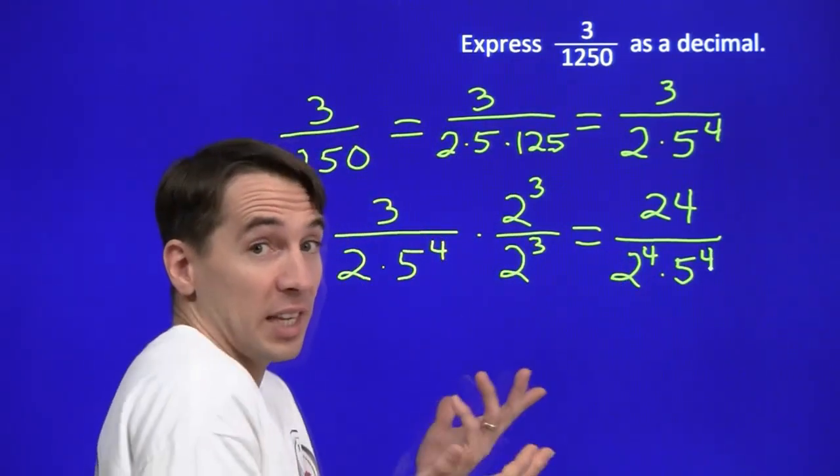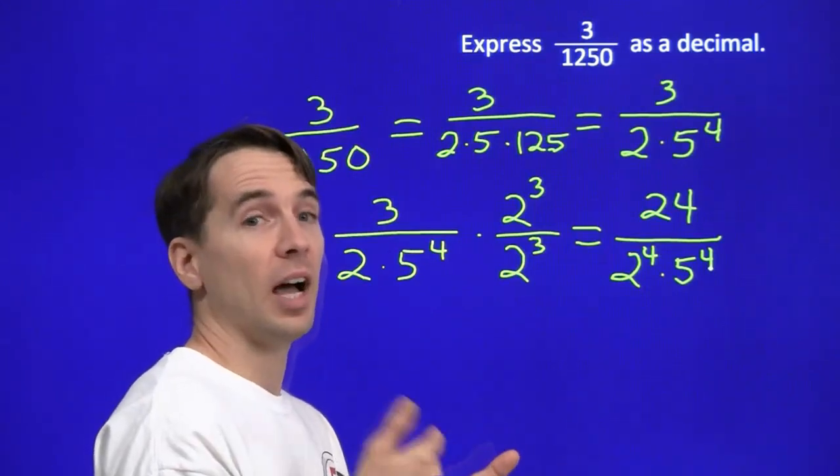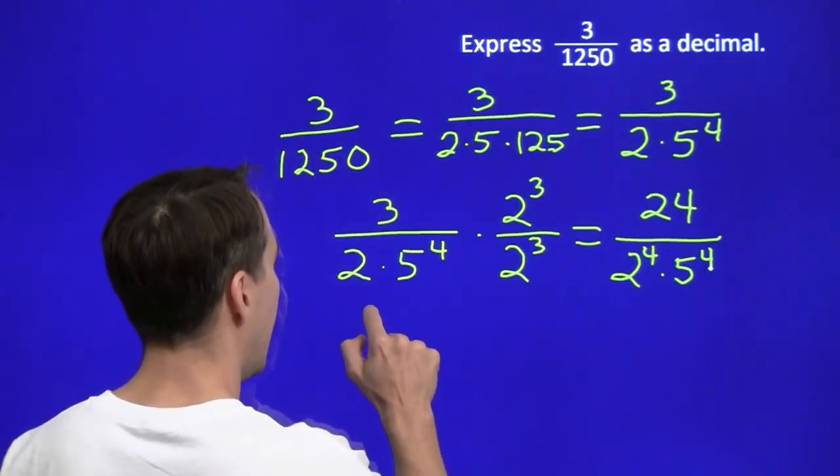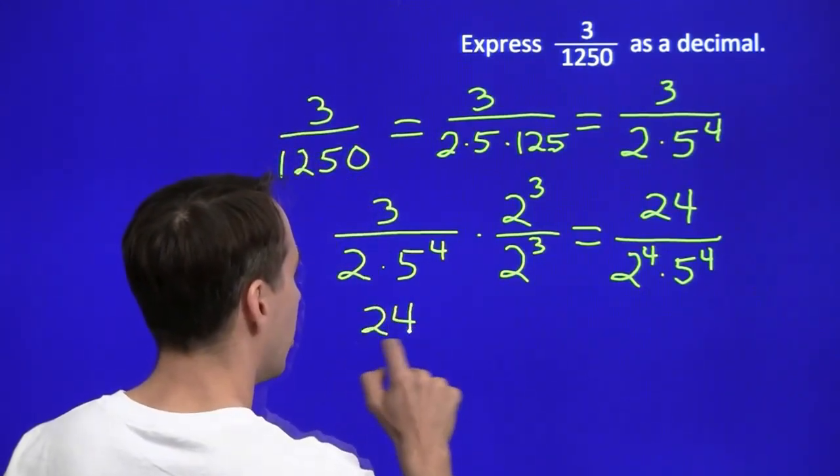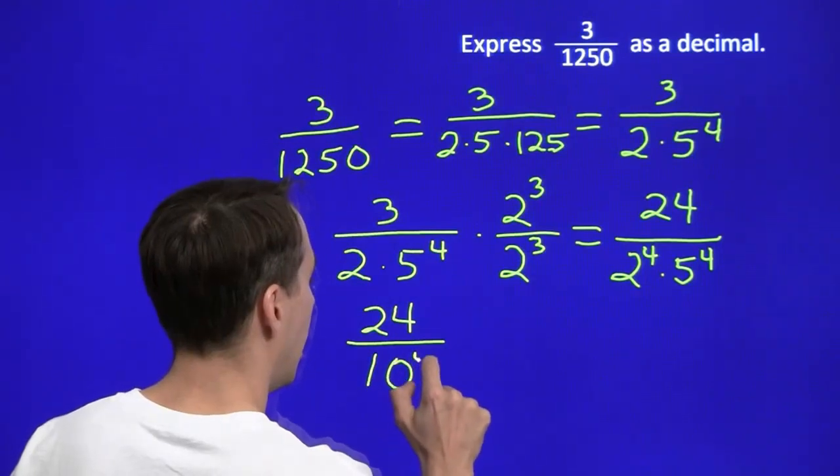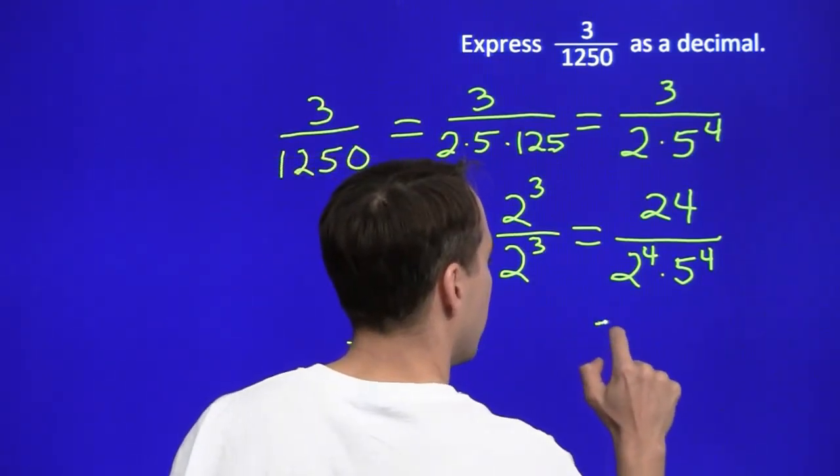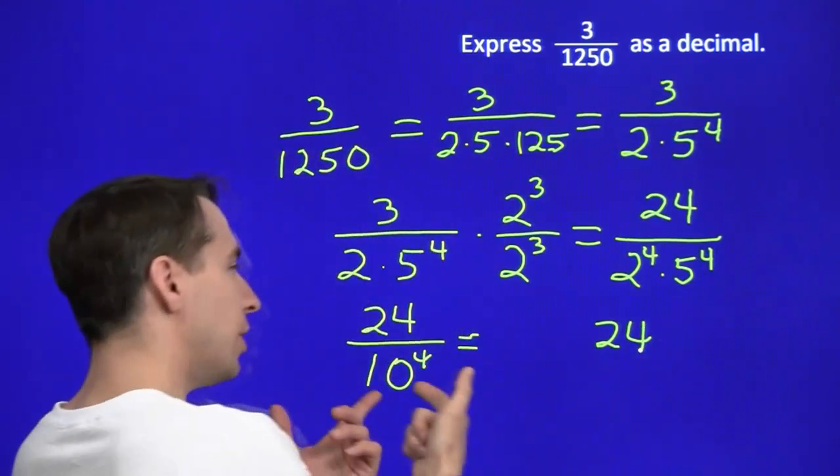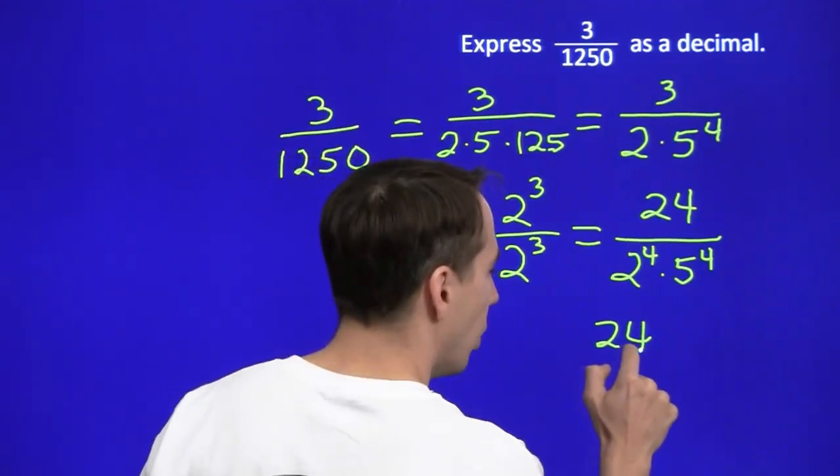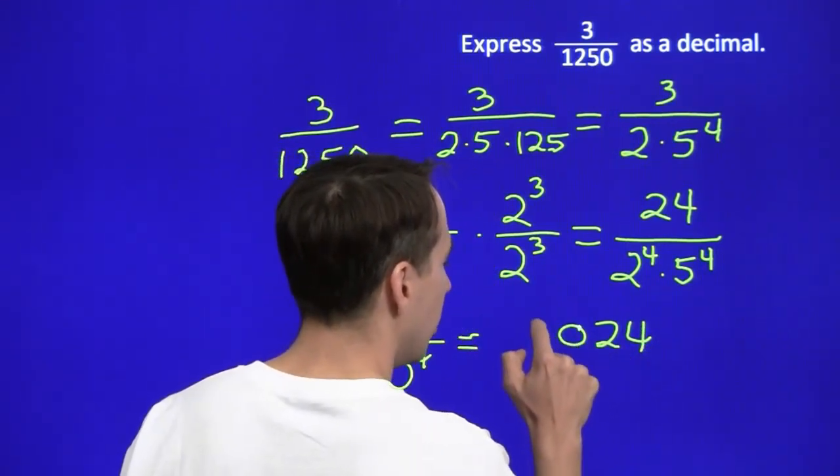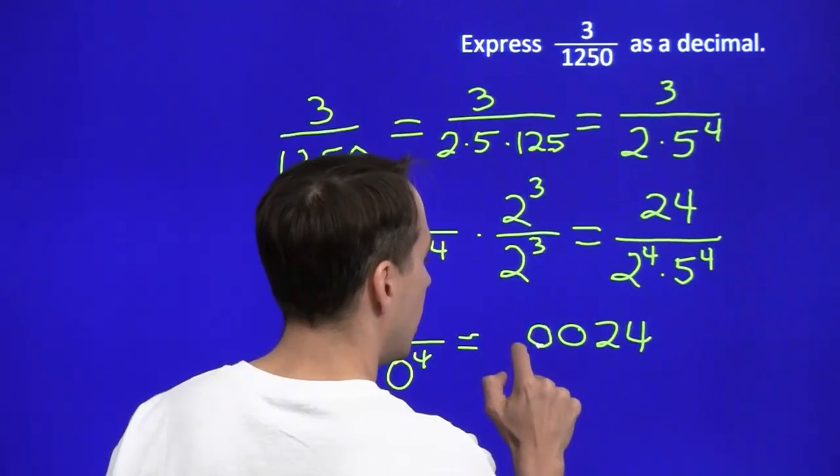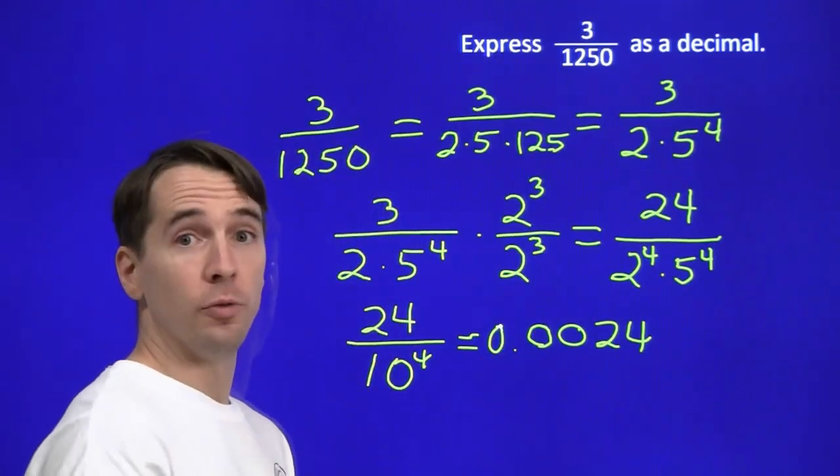Of course, 2 to the 4th times 5 to the 4th, that's the same thing as the 4th power of 2 times 5, the 4th power of 10. And we have made our denominator a power of 10. We know how to tackle this. We start with 24, move the decimal point four places to the left. 1, 2, 3, 4. And sure enough, our answer is 0.0024.